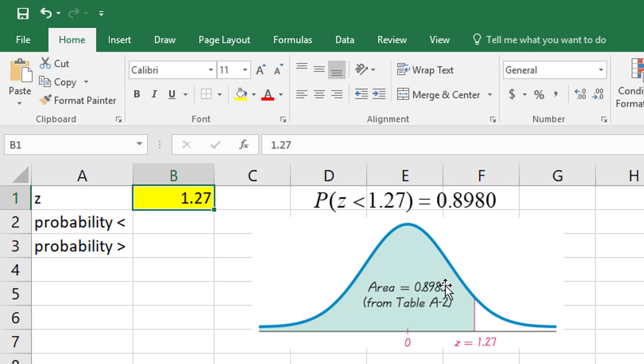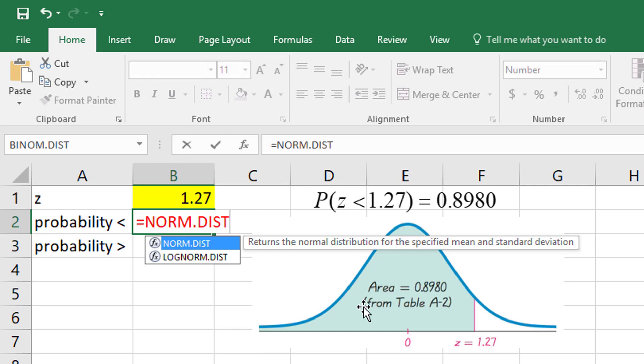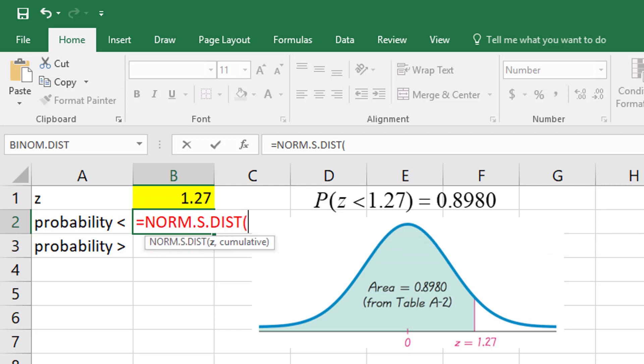You can do this in Excel with the NORM.S.DIST function. Open a parenthesis - oops, sorry, wrong one - NORM.S.DIST. Notice here it says returns the standard normal distribution has a mean of zero, so in other words, this is the probability value from the table.